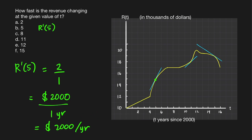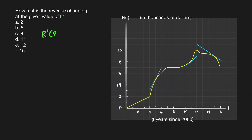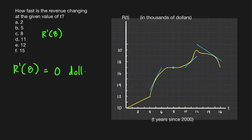For problem C, we're looking for R prime of 8, the slope of the tangent line at T equals 8. At that point, the tangent line is a horizontal line, so its slope equals 0. Therefore, the rate of change is $0 per year, meaning the revenue is not changing at this point.